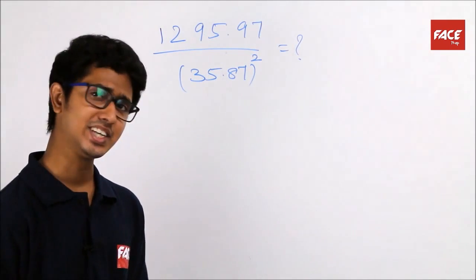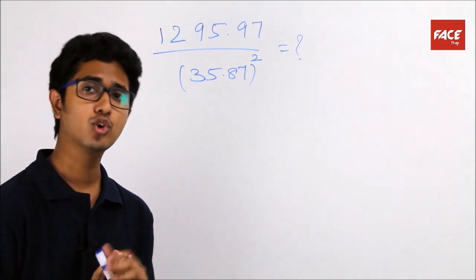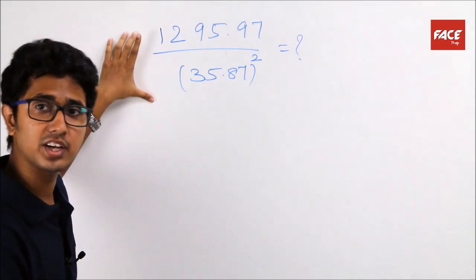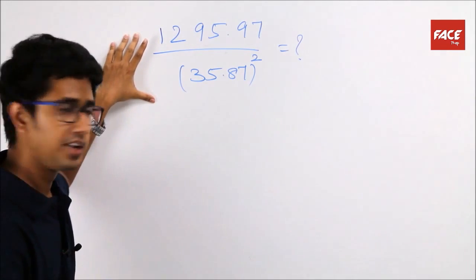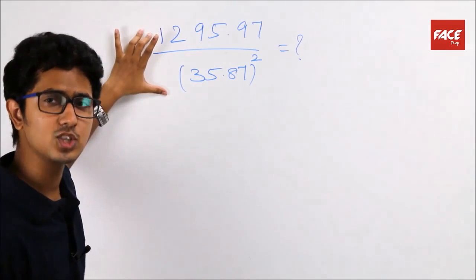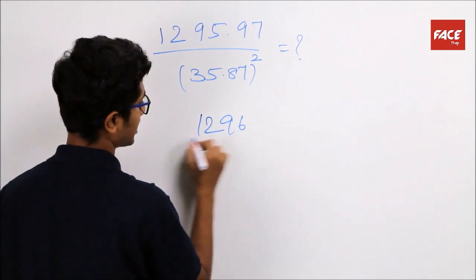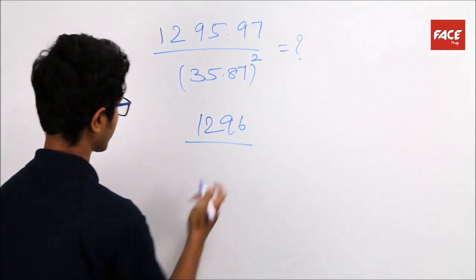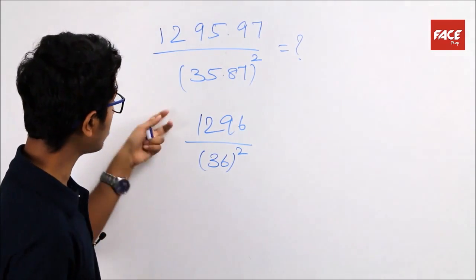The second type of problem that actually takes a long time to solve is the approximation and simplification type problems. How do you go about solving such problems is the question. First of all, we will be approximating the given values in the question and then go about simplifying it. Approximating this problem further, 1295.97 can be approximated as 1296, divided by 35.87 can be approximated as 36, the whole square.